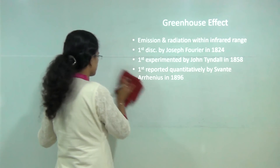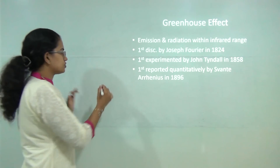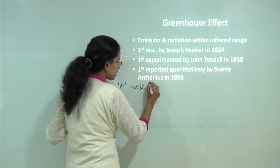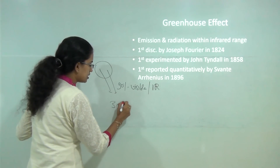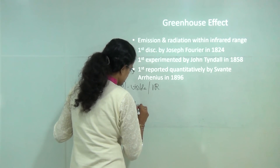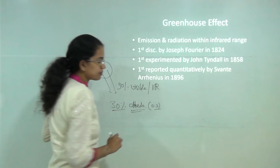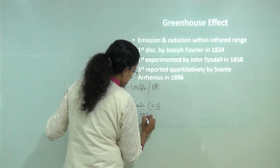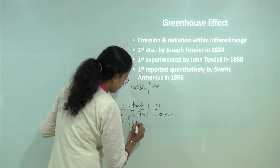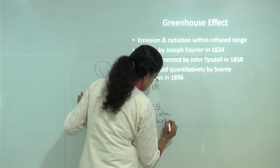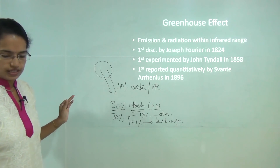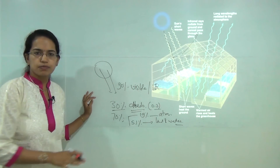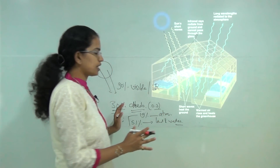When we talk about radiations from the sun, nearly 90% of the radiations coming in are in the form of visible light or infrared radiations. Of this, 30% is absorbed — that's the albedo, approximately 0.3. The remaining 70% goes back: nearly 19% goes back to the atmosphere and 51% to land and water. This is the basic distribution of incoming and outgoing radiation in the greenhouse effect.